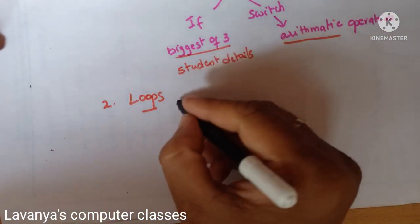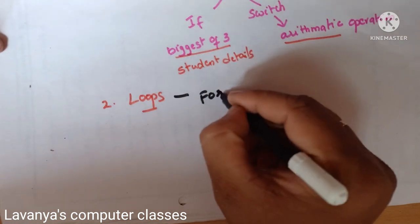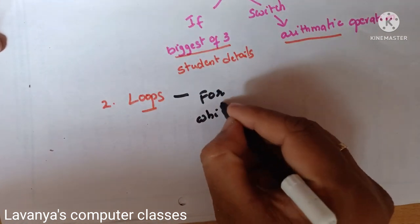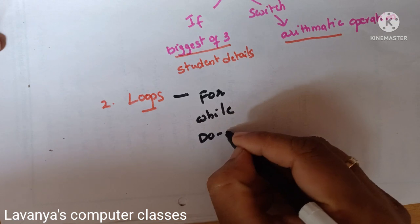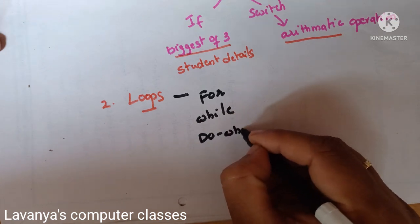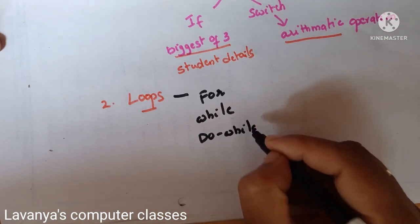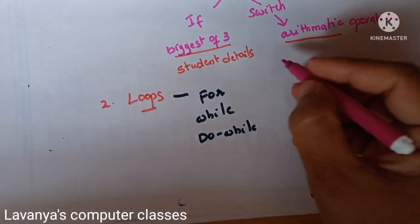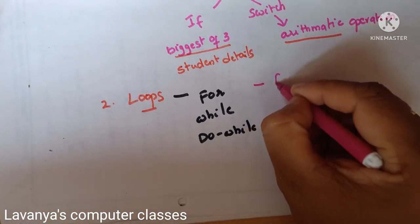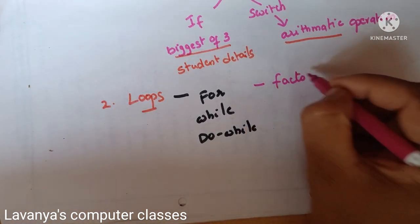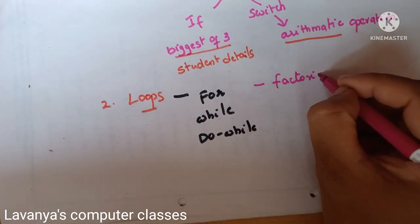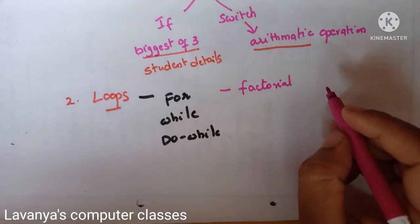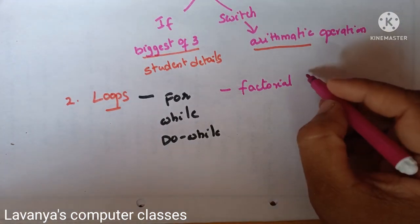The next concept is loops. In loops, there are three different types in C language: the for loop, while loop, and do-while loop. The first important program in loop statements is factorial of a given number — very, very important.